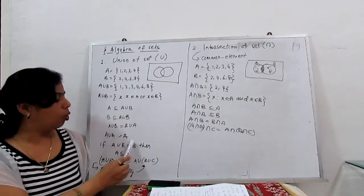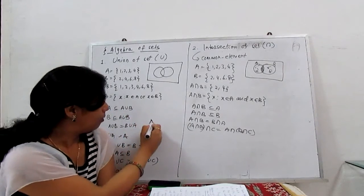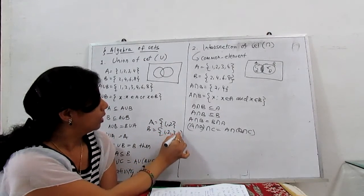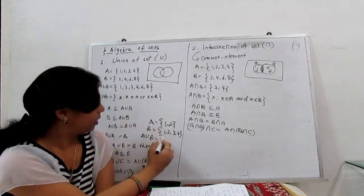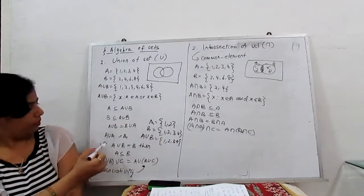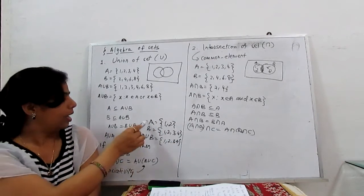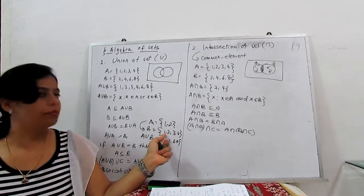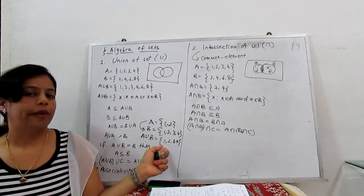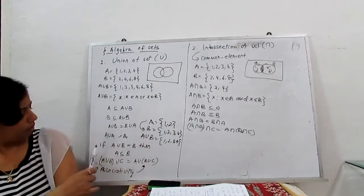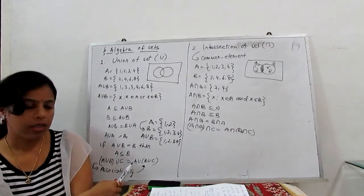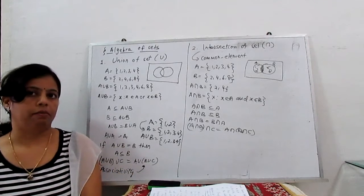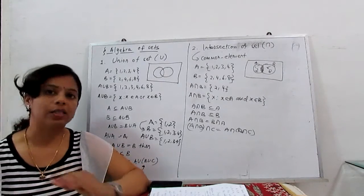If A union B gives the whole set B, then A is always a subset of B. For example, if A has elements {1, 2} and B has {1, 2, 3, 4}, then A union B is {1, 2, 3, 4}, which is B. So A is a subset of B because 1 and 2 are both elements of B. Union also follows the associative law: (A union B) union C equals A union (B union C), and both give the same answer.